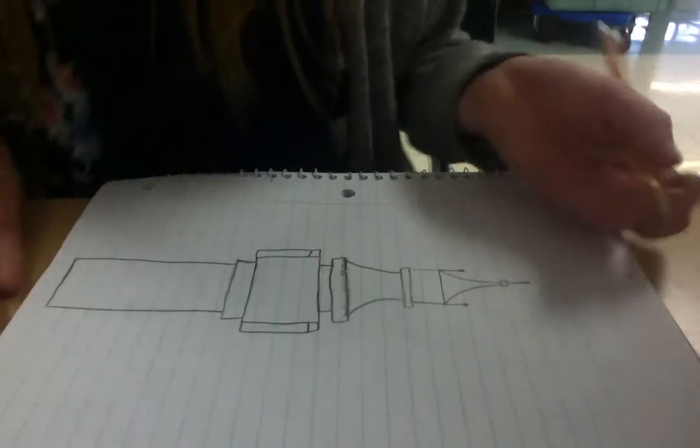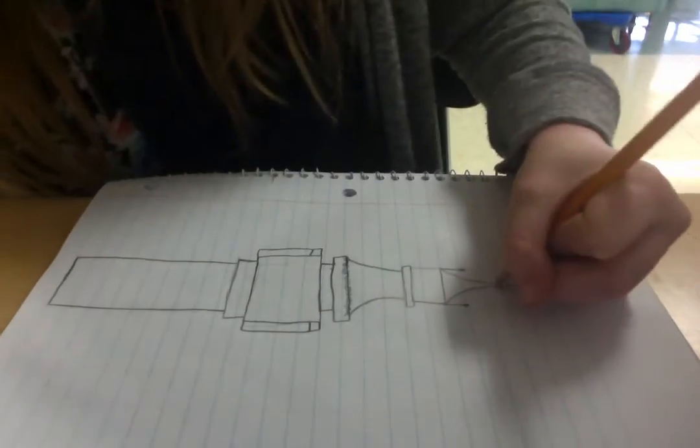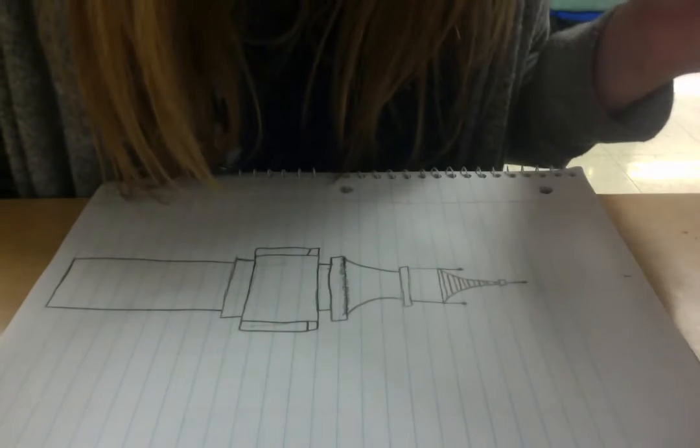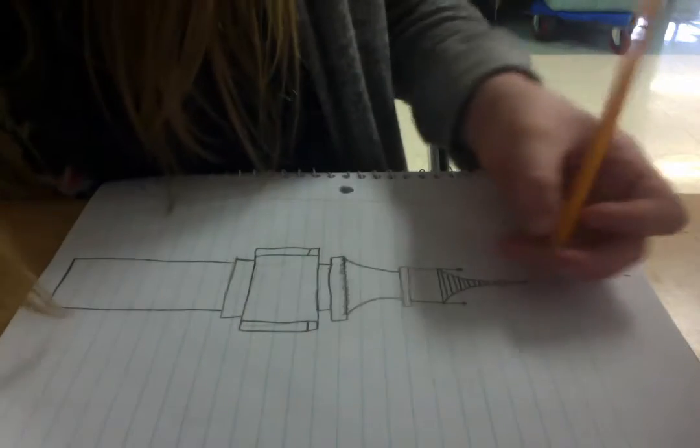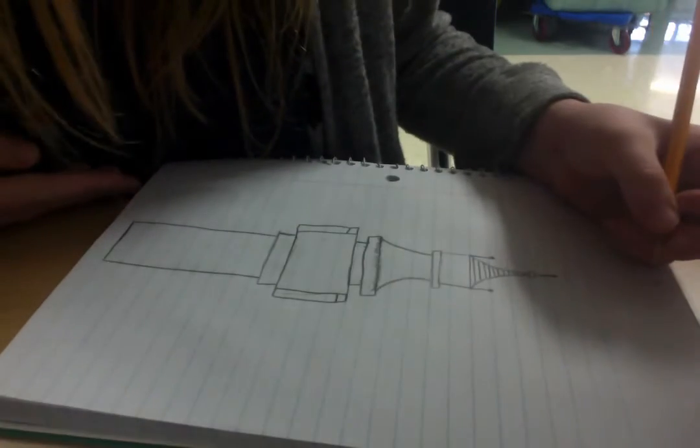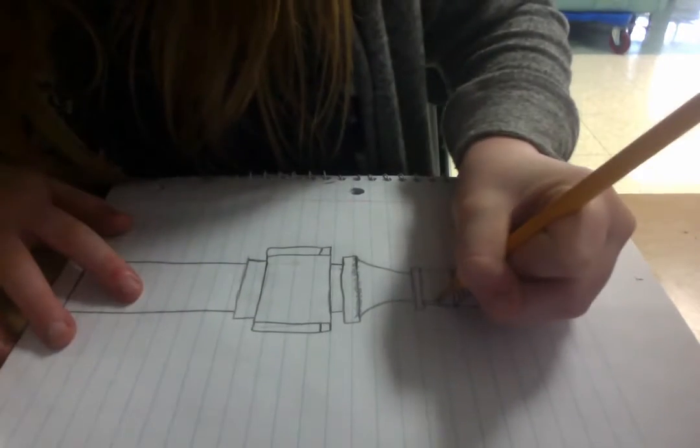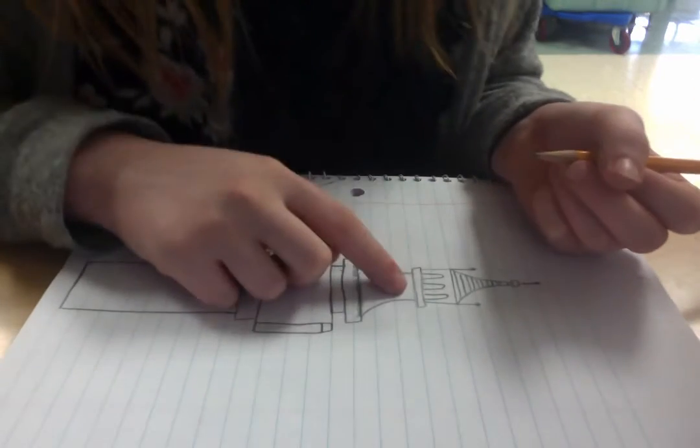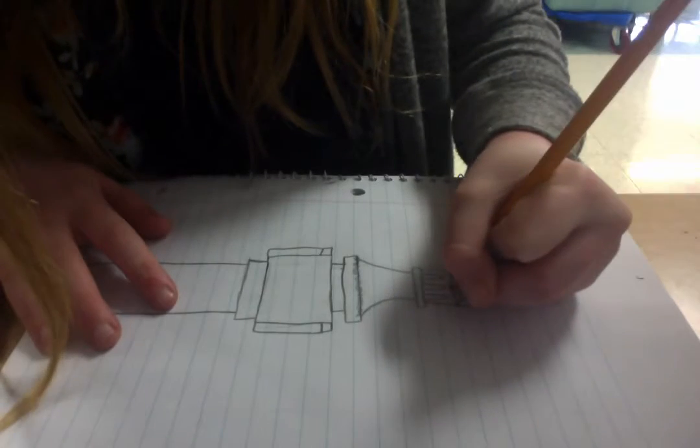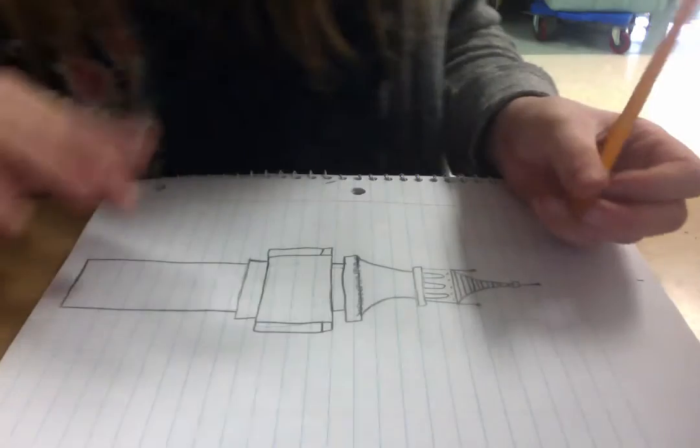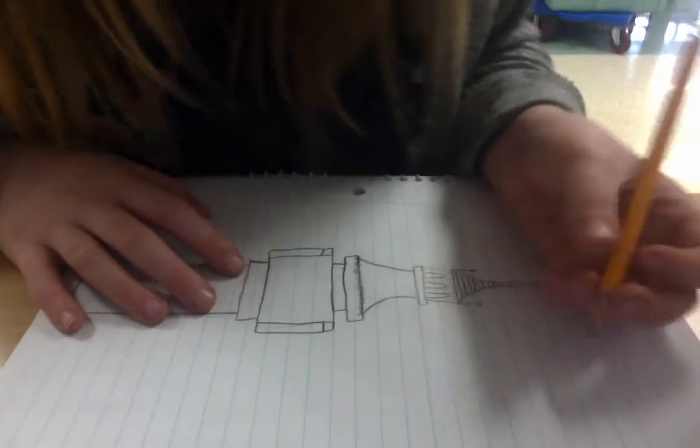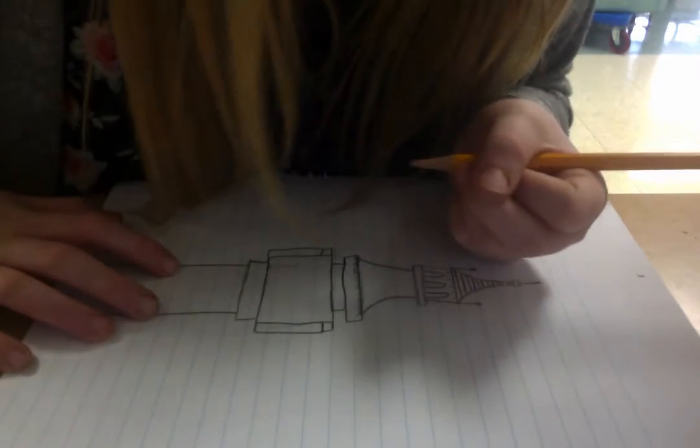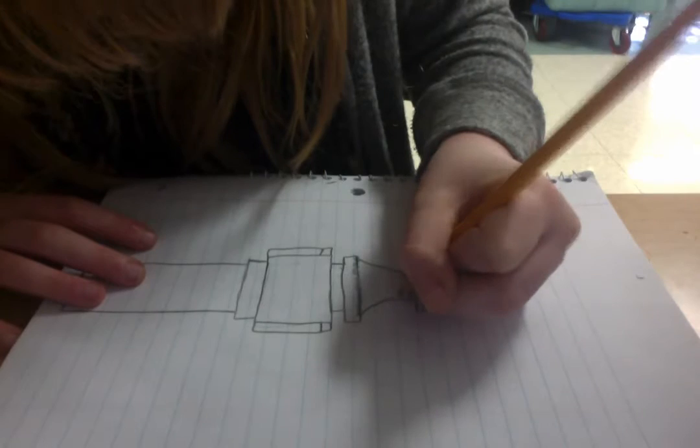So now it's time to start on the detail work which I'm excited about. First we're going to make lines going down, make sure they're close together. Then we're going to do little humps. We'll fill those in later because these are black. Then we're going to do dots. Then we have more squiggly lines, I'm doing three of them.